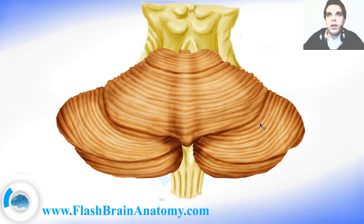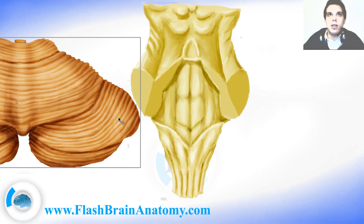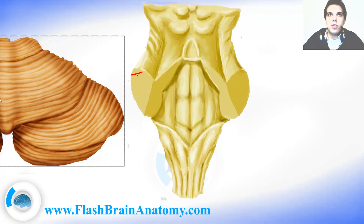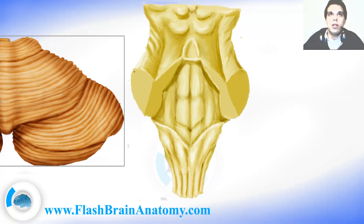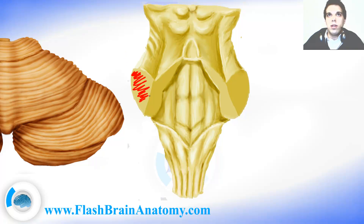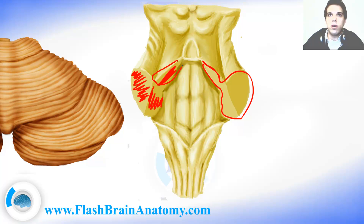Now if we simply cut the cerebellum off, this is what we would be able to see. This is where we made the cut — we have cut the fibers that go in and leave the cerebellum through these structures, which are called peduncles. We have the middle peduncle, the inferior peduncle, and the superior one, and the same on the other side.